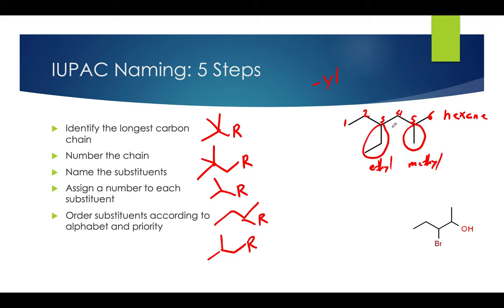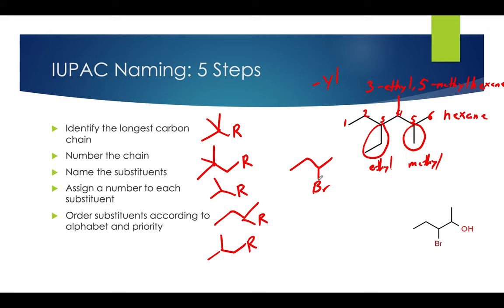If there was another ethyl group or another methyl group present, we would call it dimethyl and take into account where it would be located — for example, 4,5-dimethylhexane — but there isn't, so we don't have to worry about that. Now that we've numbered our substituents, we can finish naming this molecule: 3-ethyl-5-methylhexane. This is a good example because it shows everything associated with naming a molecule with several carbon chains and all the IUPAC naming standards.